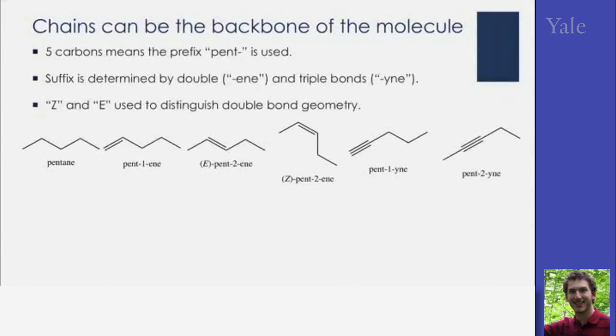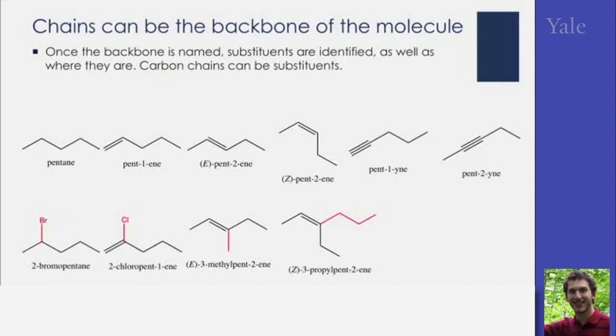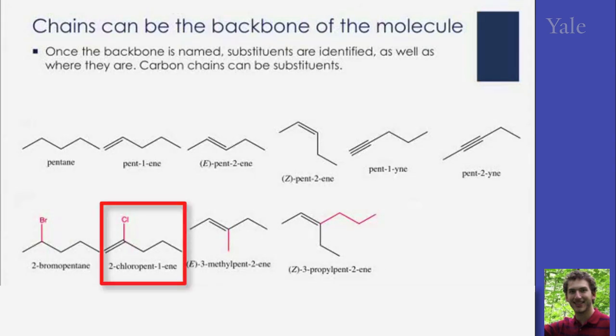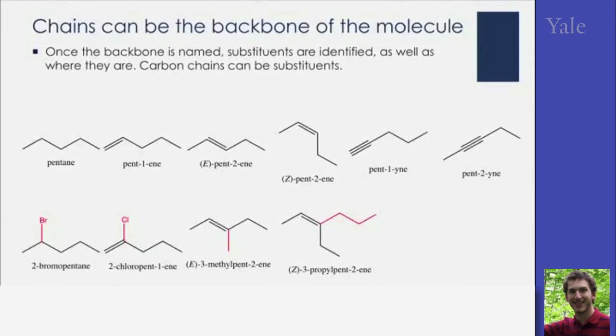Once the backbone is defined, we can start talking about substitutions, decorations on the side. So we can have a 2-bromopentane, where we have to indicate where the substitution is. 2-chloropent-1-ene, you still need to contain all of the information about the backbone when you add the information about the substituents.